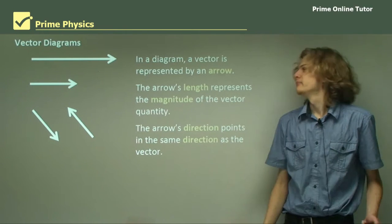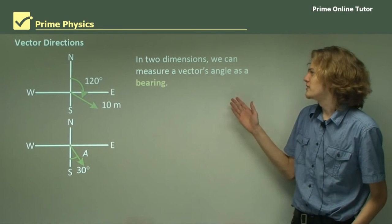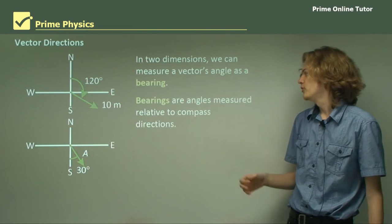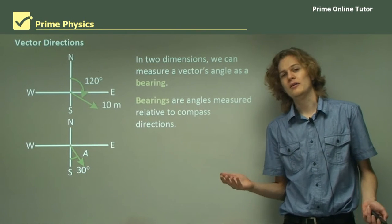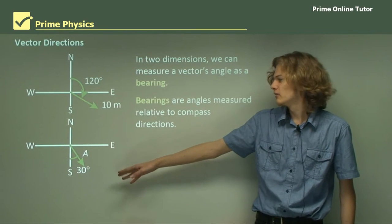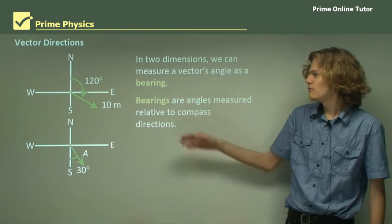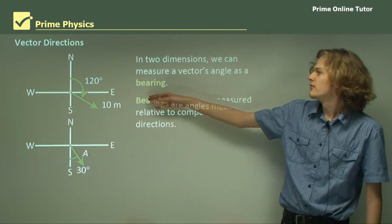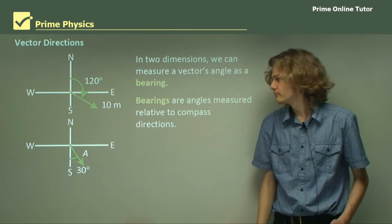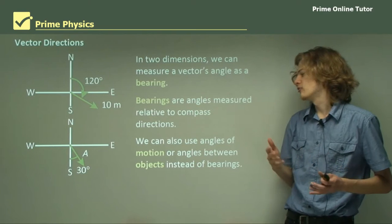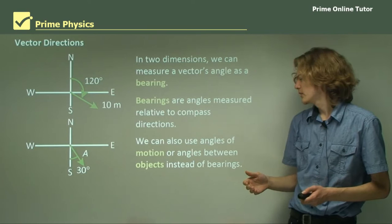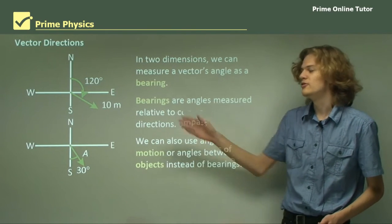So how do we measure the angle of a vector? In two dimensions, we can measure a vector's angle as a bearing. Bearings are angles measured relative to compass directions, which you've learned about in mathematics. Here we can see the bearing south 30 degrees east, and a vector that's 10 meters long at an angle of 120 degrees true — that is, 120 degrees east of north. We can also use angles of motion or angles between objects to measure angles instead of bearings, but in this section we'll just be using bearings.